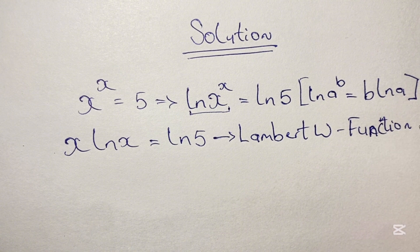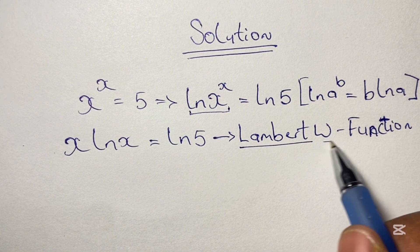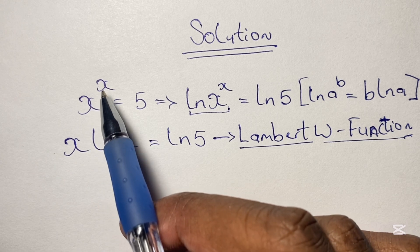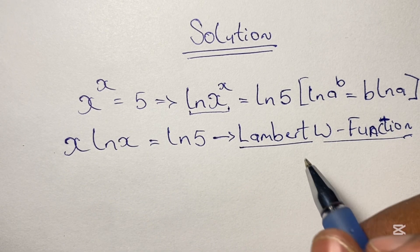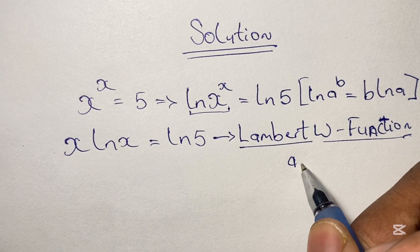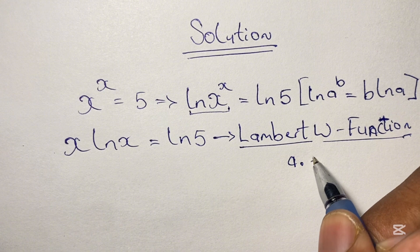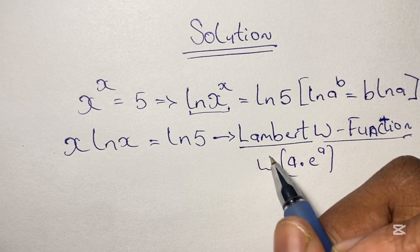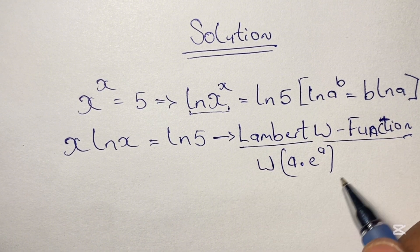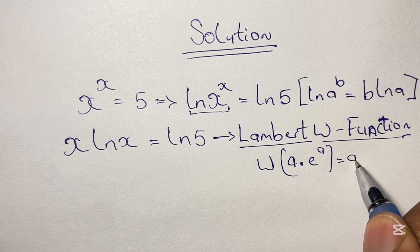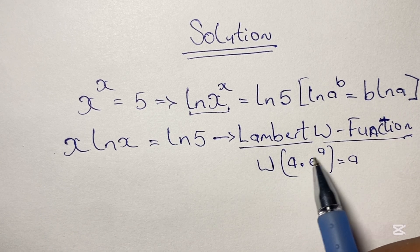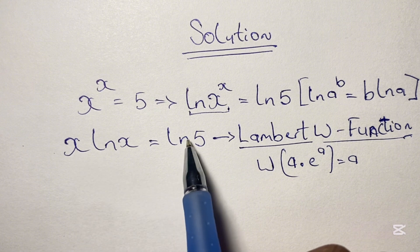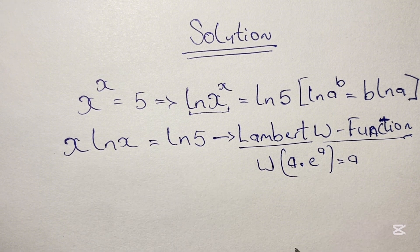This method is used to solve equations where the variable is in both the base and the power. The key property is: where we have an expression a times e to the power of a, if we apply the W function to this expression, the result is a.